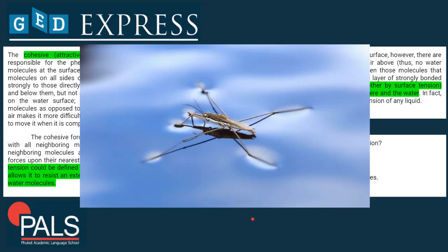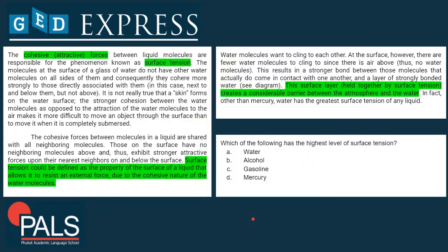Let's go to the next question: which of the following has the highest level of surface tension? Water, alcohol, gasoline, or mercury? In the whole text, we don't find anything about alcohol or gasoline, so we can definitely cross those two out. We are left with water and mercury. The whole text is about water, and here it's about your close reading ability — are you able to spot the important sentence? It's the very last sentence that gives away the right answer.